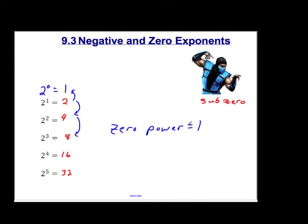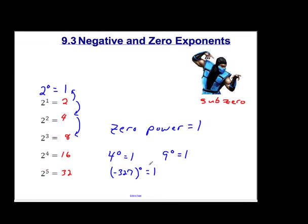Huge rule right there — anything to the zero power equals 1. Zero power always, always equals 1, no matter what. 4 to the zero — boom, it's 1. 9 to the zero — it's 1. Negative 327 raised to the zero power — 1. Awesome, I love that rule. Easy to remember, good to go.